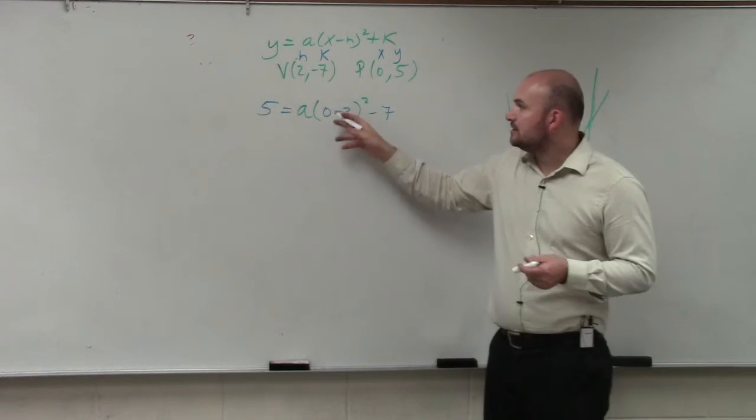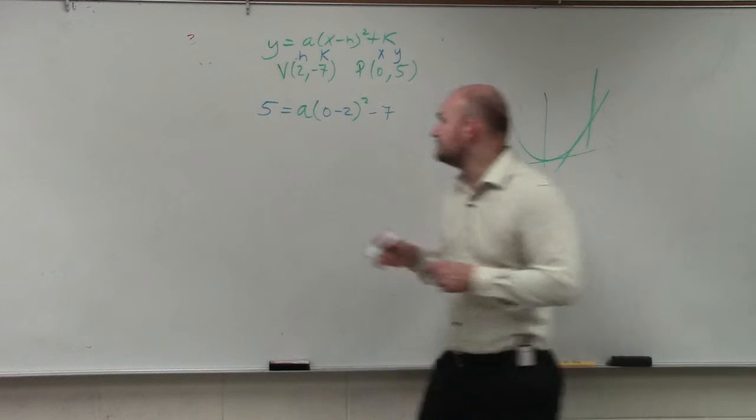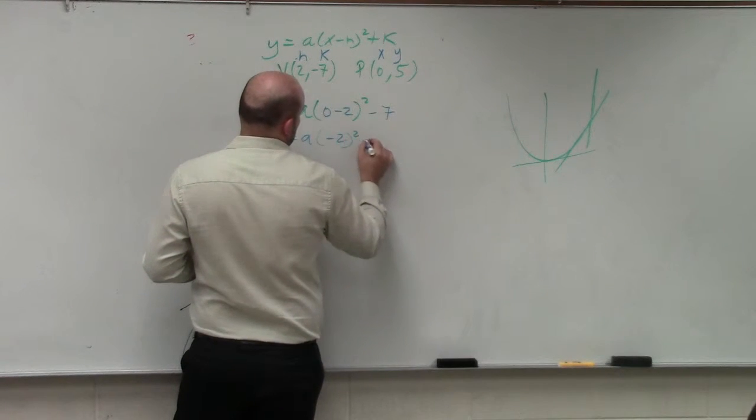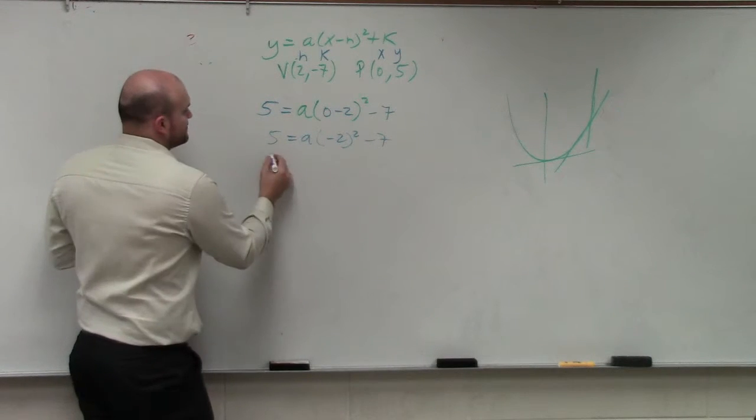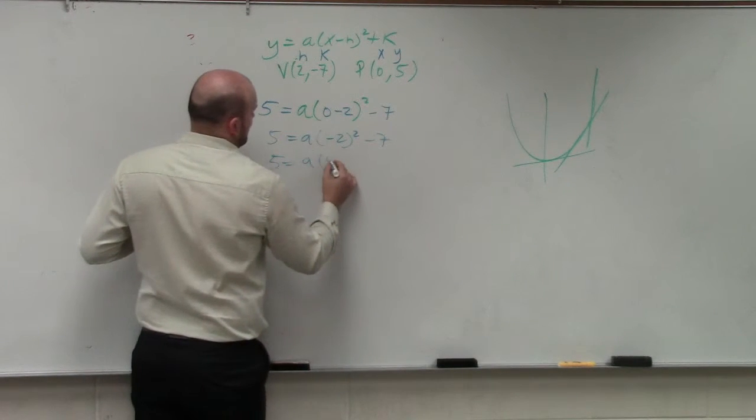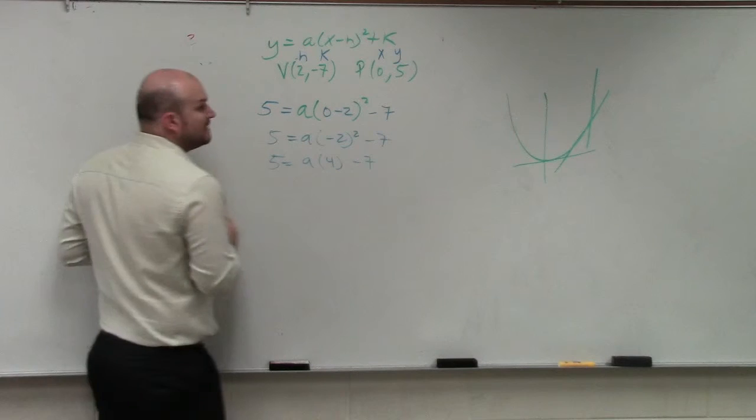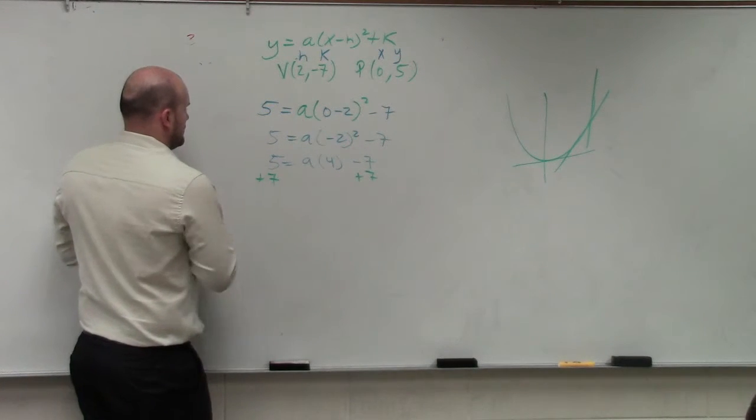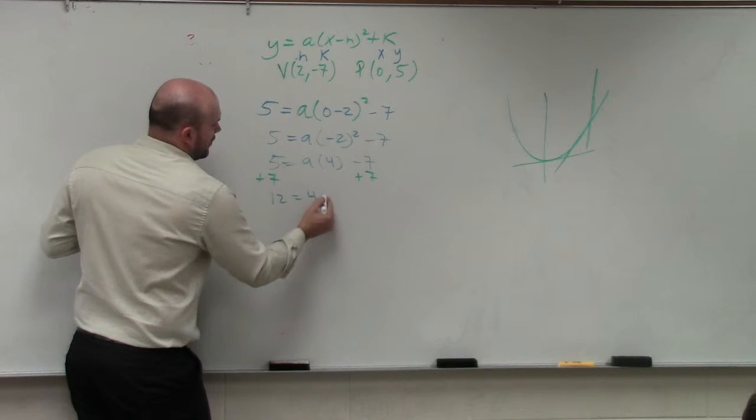Now, I just need to simplify. 0 minus 2 is negative 2. I'll just show my work. Negative 2 squared is 4. Now, I just add 7.